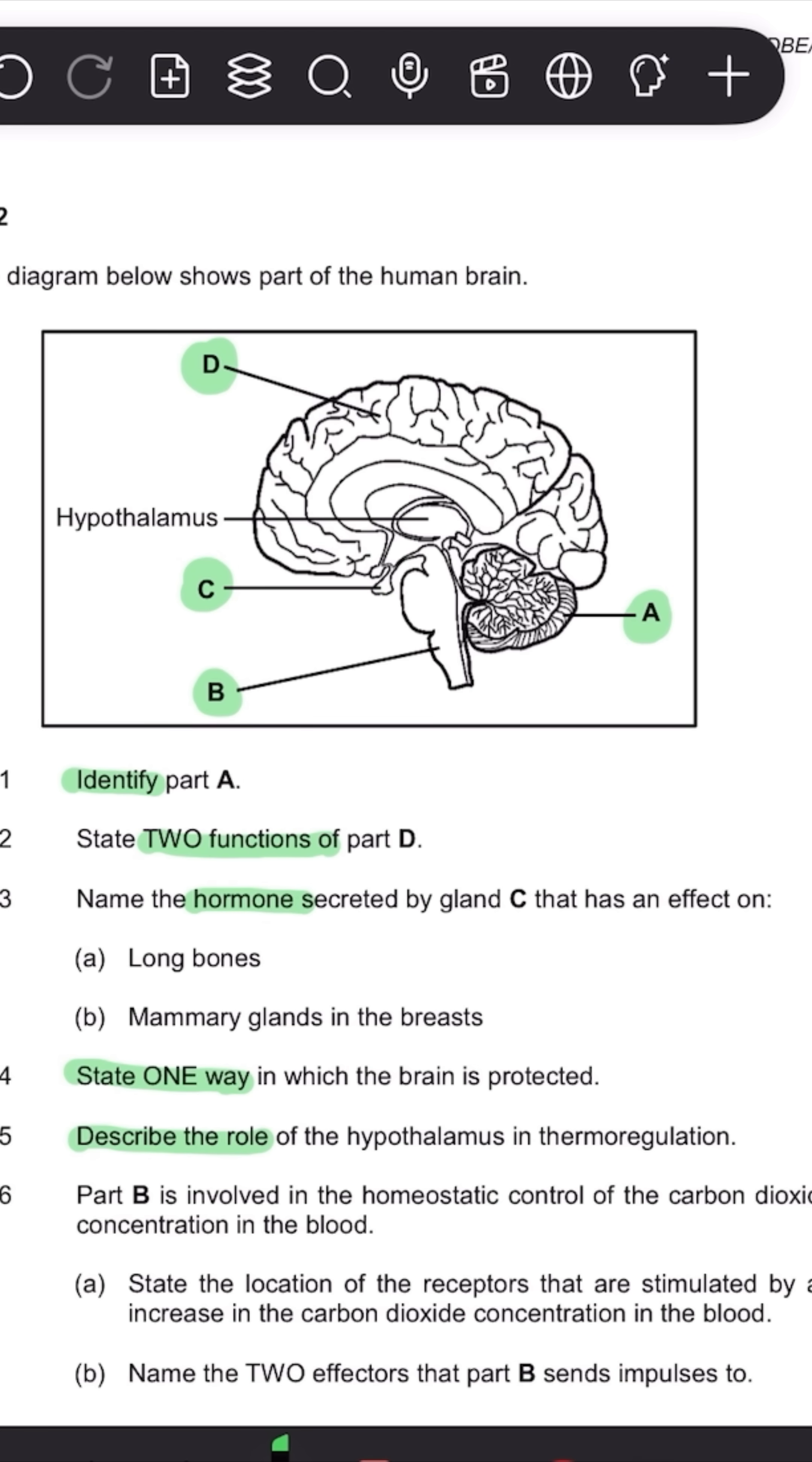Next one is part B is involved in homeostatic control of carbon dioxide concentration in the blood. State the location. So again, that's just the one word, one mark. State the location.